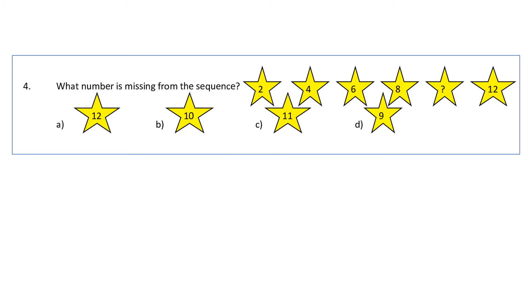What number is missing from the sequence? We can see numbers written in the star and here there is a question mark. We have to check what pattern it is following. First is 2, 4, 6, 8, then question mark, then 12. If you look, it is skip counting 2 - they have skipped one number in between every two numbers. So 2, 4, 6, 8, now we will be skipping 9, so in this question mark it will come 10. The answer will be 10.